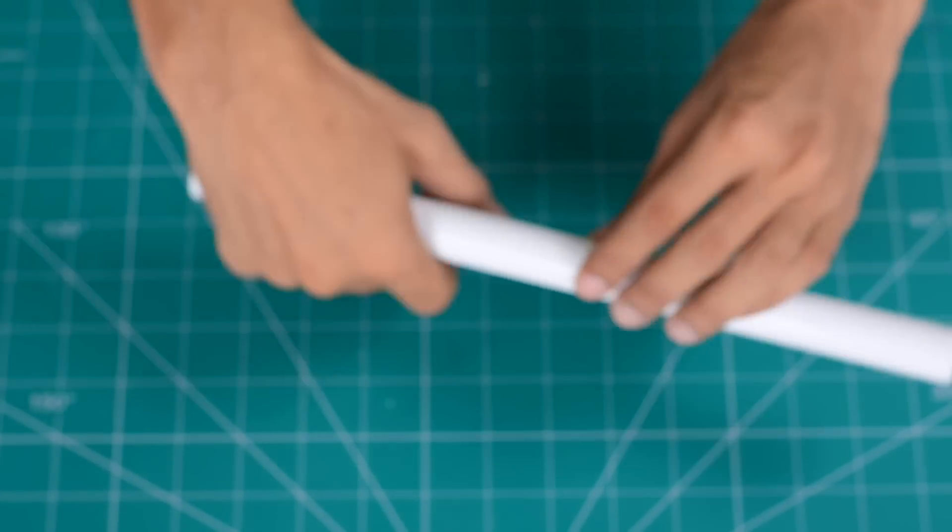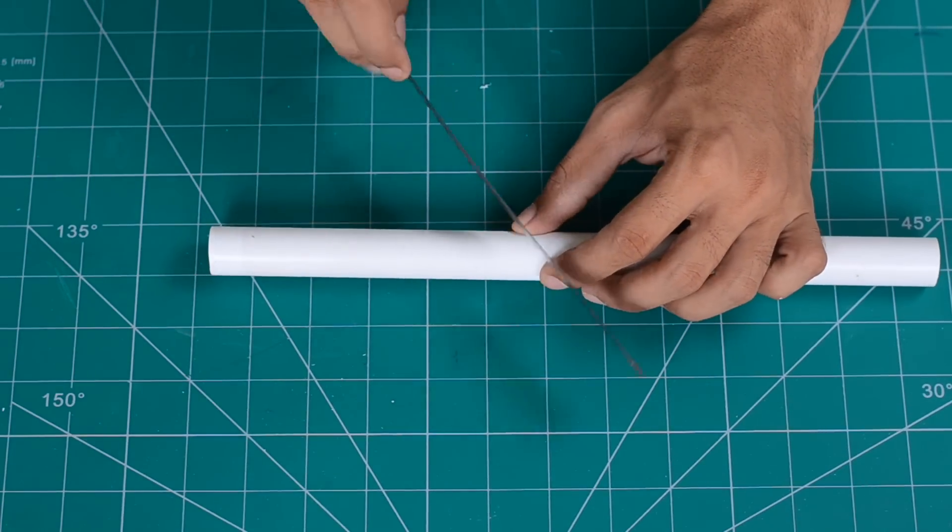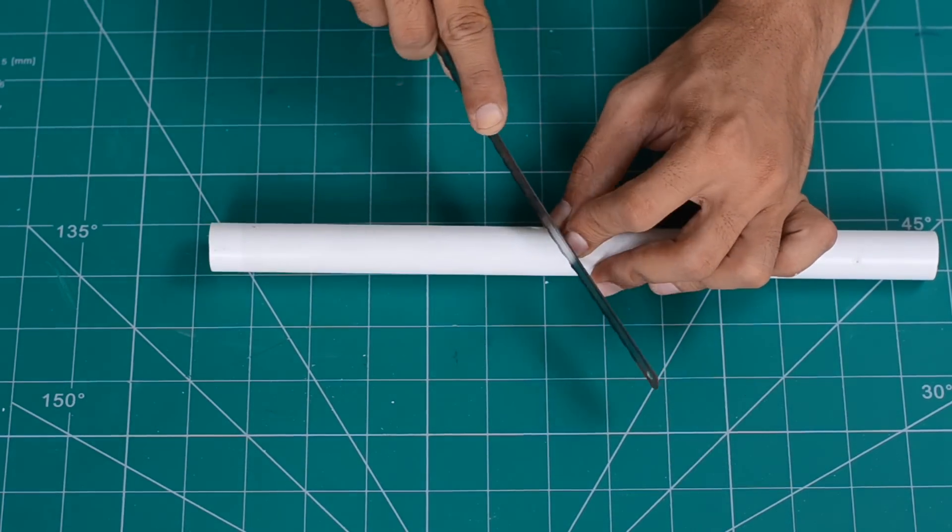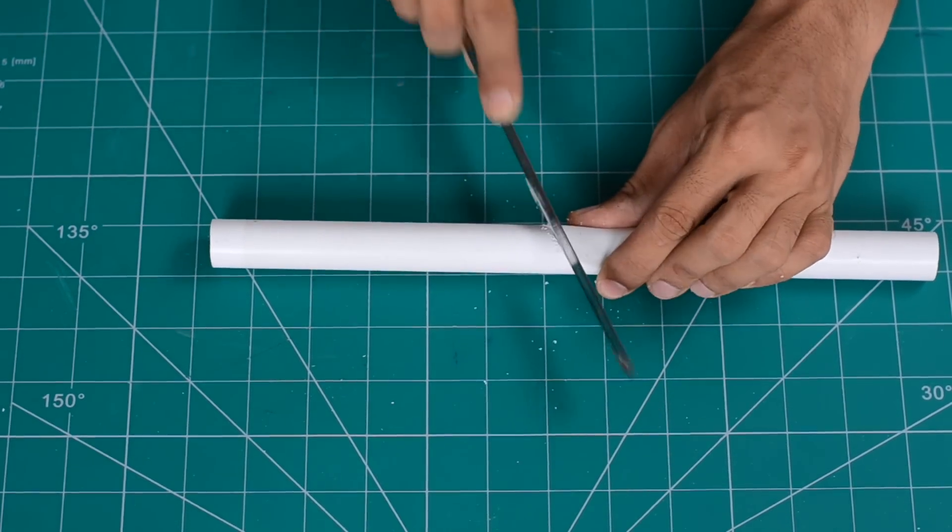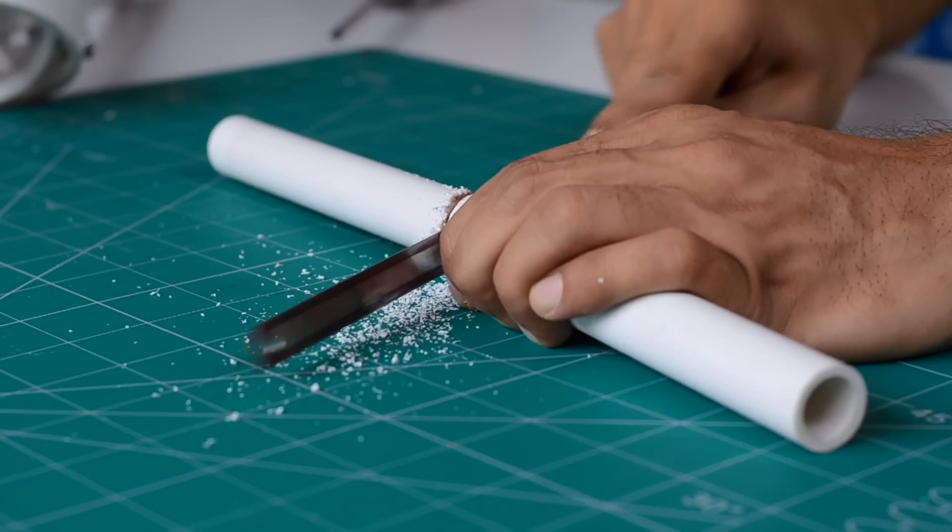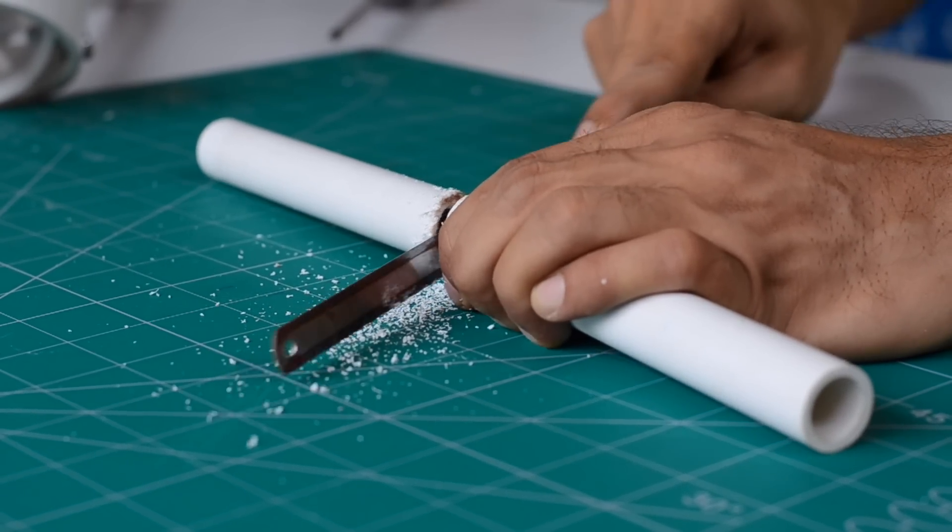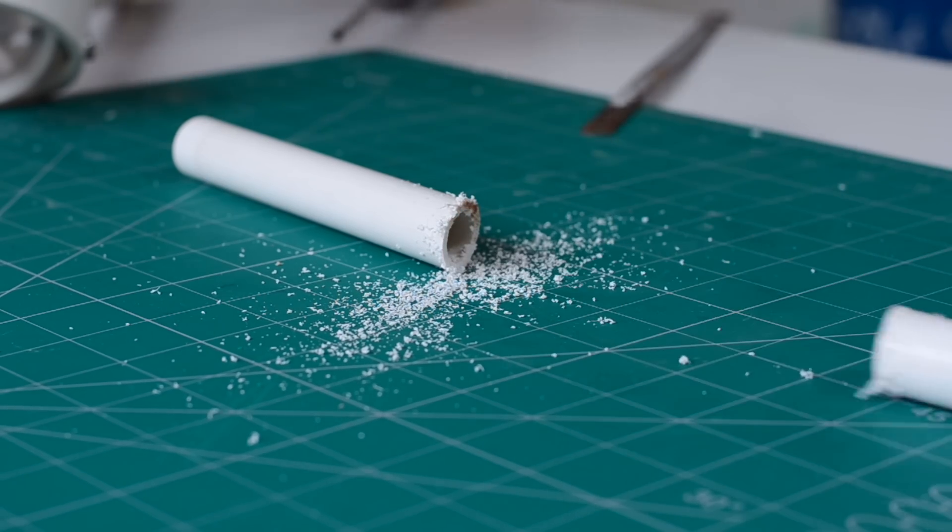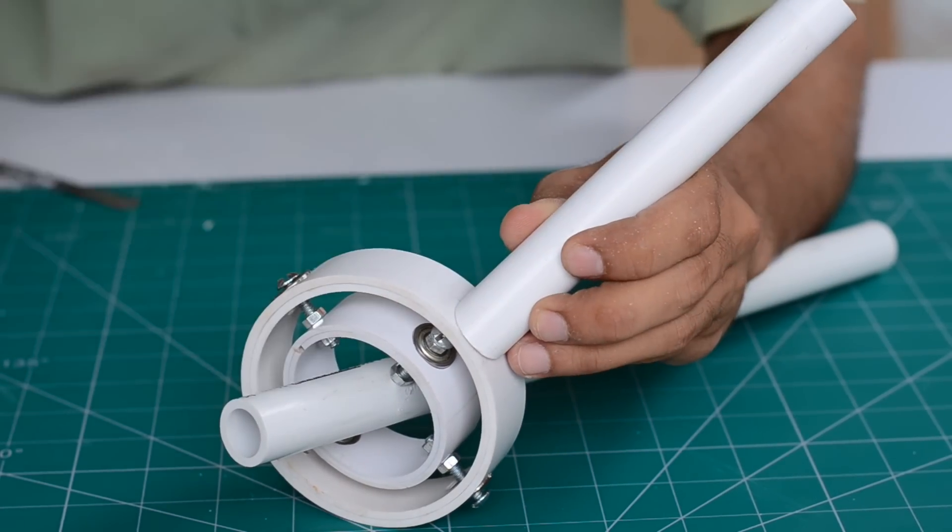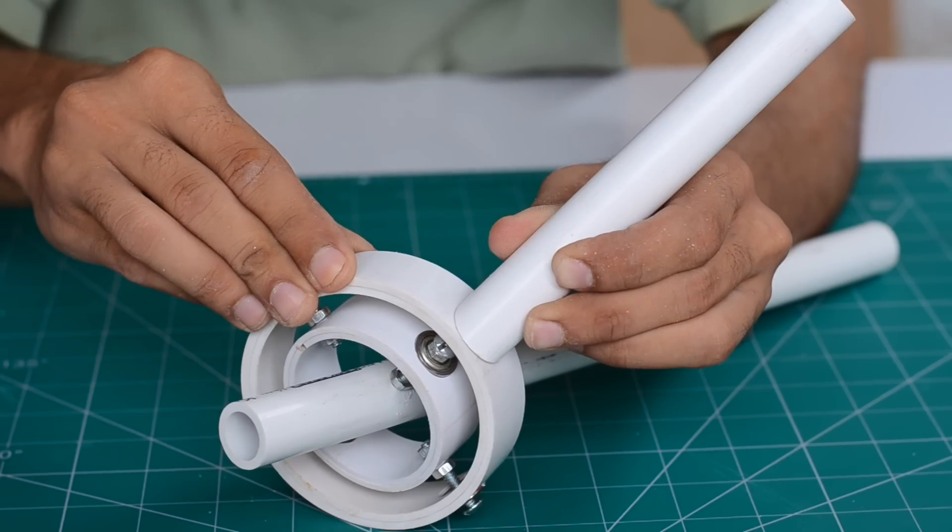To hold this gimbal we obviously need a handle that is made out of half inch PVC pipe. The handle is cut up to 6 inches in length with a slight angle at one end which will help us hold the gimbal more conveniently. The handle is glued to the outer 3 inch PVC strip.